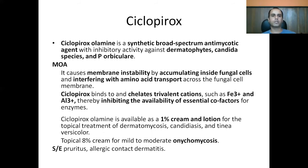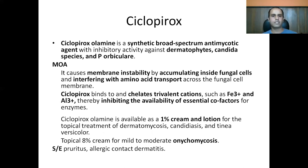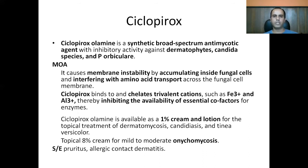Ciclopirox olamine is a synthetic broad-spectrum antimicrobial agent with inhibitory activity against dermatophytes, Candida species, and Malassezia furfur (present in tinea versicolor and seborrheic dermatitis). It works by binding to and chelating trivalent cations such as iron and aluminum ions, inhibiting availability of essential cofactors for enzymes. It causes membrane instability by accumulating inside the fungal cells and interfering with amino acid transport across the cell membrane. Available as 1% cream and lotion for topical dermatomycosis, candidiasis, and tinea versicolor; an 8% cream is available for mild-to-moderate onychomycosis. Side effects include pruritus and allergic contact dermatitis.